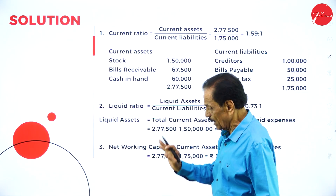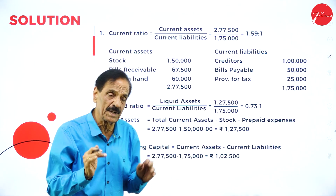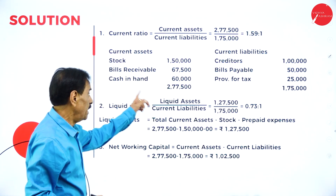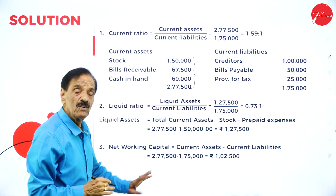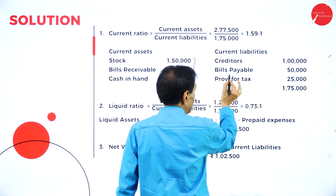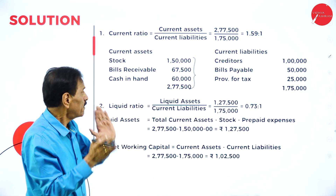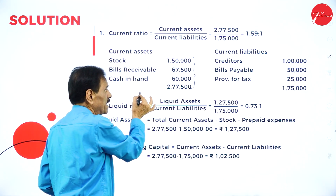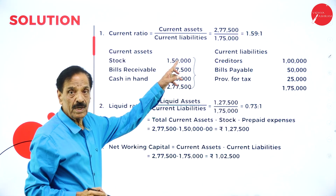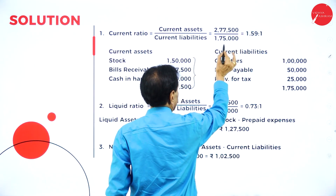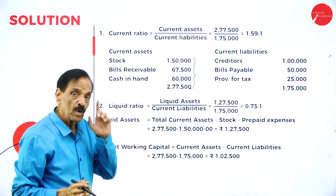Current ratio: current asset divided by current liability. Which are the current assets? Stock, debtors, and cash in hand — total comes to 2,77,500. Which are the current liabilities? Creditors, bills payable, and provision for taxation — total 1,75,000. Apply current ratio: current asset divided by current liability = 2,77,500 divided by 1,75,000. If the asset is about 1,59,000 and liability is 1,60,000.